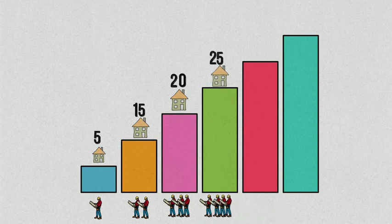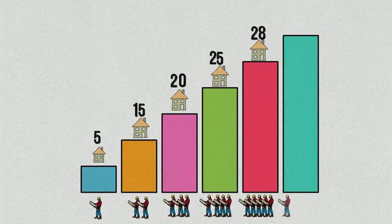If I added a fourth employee, they would be able to mow 25 houses in one day. If I added a fifth employee, they would be able to cut 28 houses in one day. If I added a sixth employee, they would be able to mow 30 houses in one day.